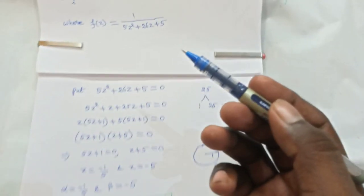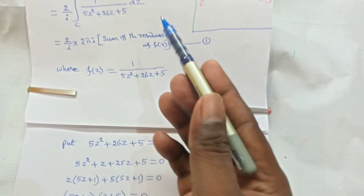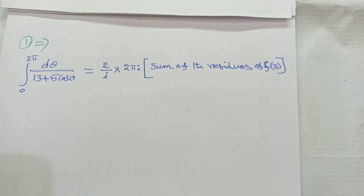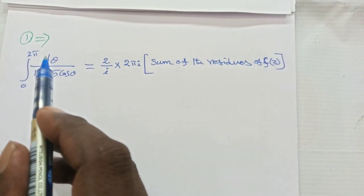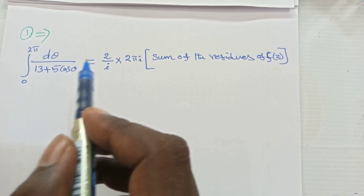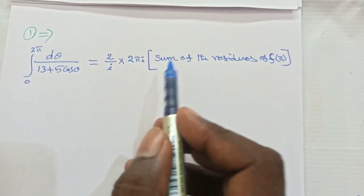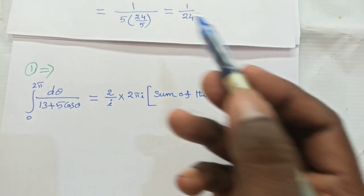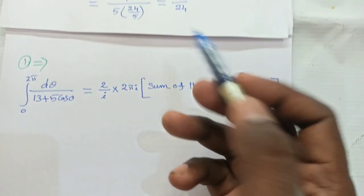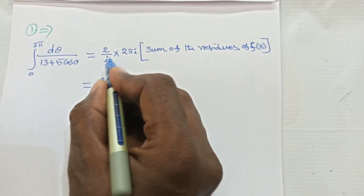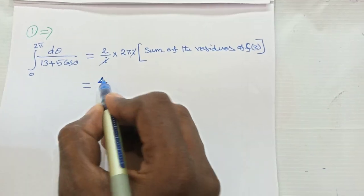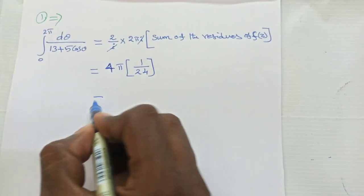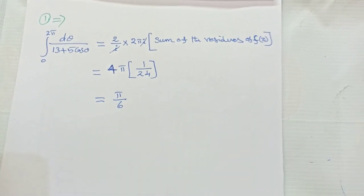Substituting into equation 1: ∫₀²π dθ/(13 + 5cosθ) = (2/i) × 2πi × (sum of residues). With only one residue of 1/24, and i cancelling: = 2 × 2π × (1/24) = 4π/24 = π/6. Therefore the answer is π/6.